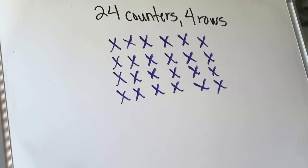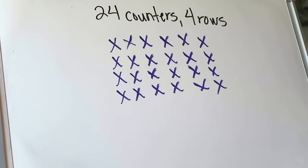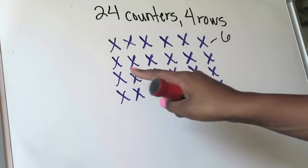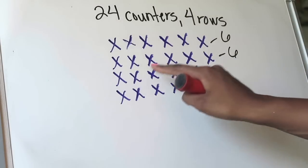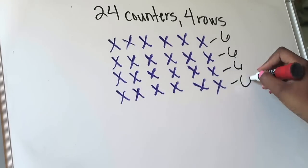Now I need to look at this and say, okay, what does that mean? How many counters are going to be in each of my rows? Well, I count one, two, three, four, five, six — so I have six there. I'm going to check my other rows to make sure they're the same, because I have to make sure I've created equal rows or equal groups. Checking each row: six, good; six, good; and six, good. So I've done that correctly.